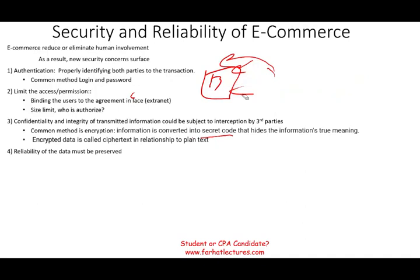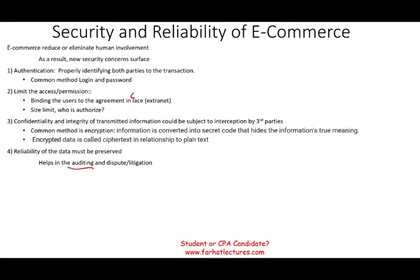Reliability of data must be preserved. If I place an order of 100 units, you should receive exactly 100 units — not 1,000. This helps in auditing: we want to make sure the numbers and quantities in the order are reliable. If there is any dispute or litigation — 'I only ordered 100 units, why did you ship 1,000?' — the reliable data from the e-commerce system serves as evidence.